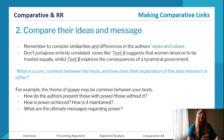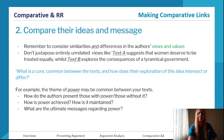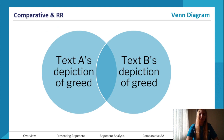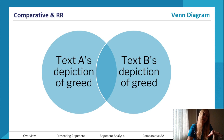Ask yourself: what is a common thing between these texts and how does the exploration of this idea intersect or differ? For example, the theme of power could be common — how do the authors present those with power or without it? How is power achieved and maintained, and what are the ultimate messages regarding power? You can view everything like a Venn diagram: what's in the overlap are similarities, what's on the outside are differences. Both are needed.